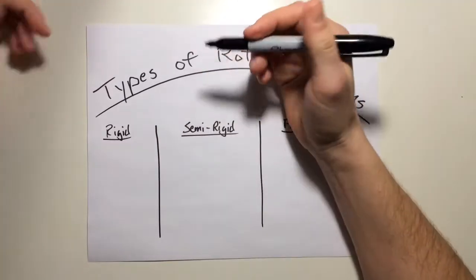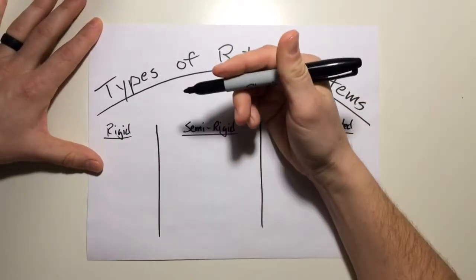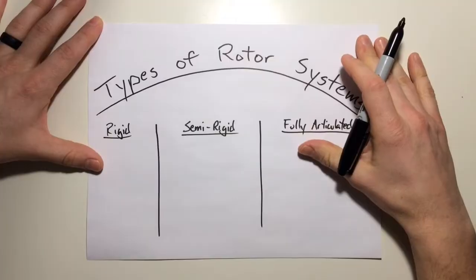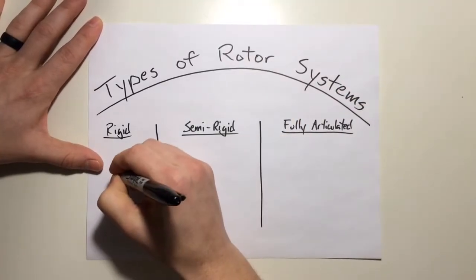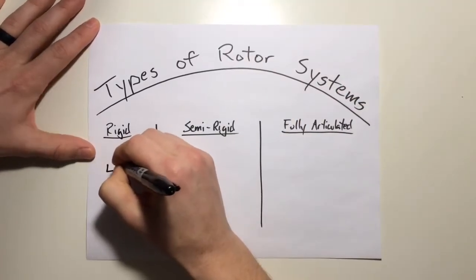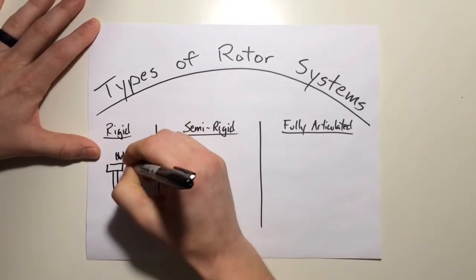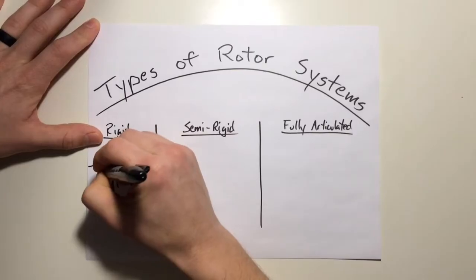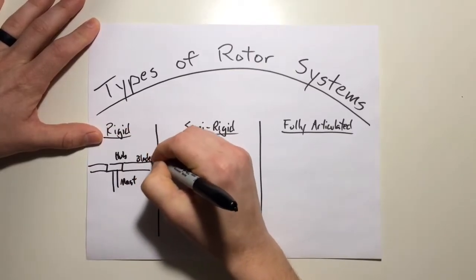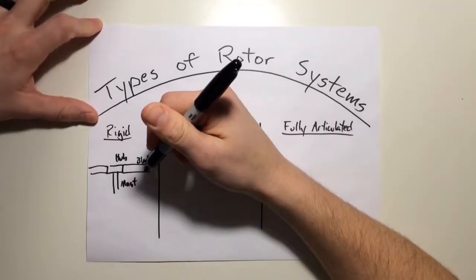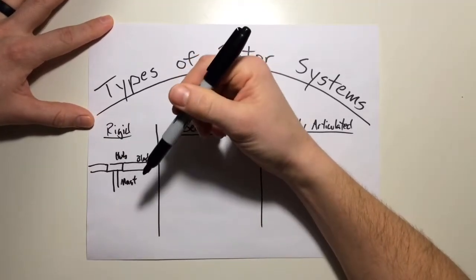In the beginning of modern-day helicopters, the first few designs had rigid rotor systems. These were simple in design and quite literally rigid when it came to the blades, the hub, and the mast. We have the mast attached to the hub, and quite simply the blades just coming off of that. Very simple system — the only motion was just the rotation and the feathering of the blades.